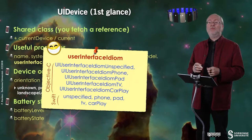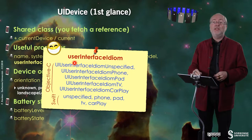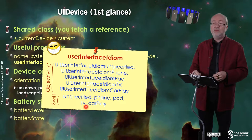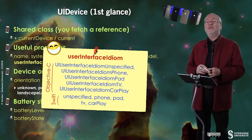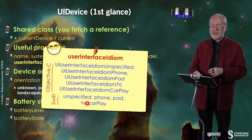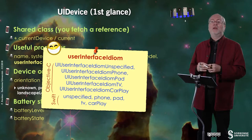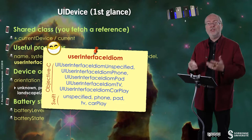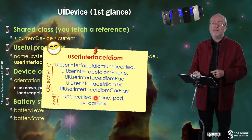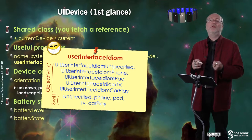User interface idiom provides many values — here you have the values in Objective-C and in Swift. In fact, you don't only get information for large or small devices. You also have access to a TV value, so you know that an Apple TV is running your application, and a specific value if your device is connected to CarPlay.